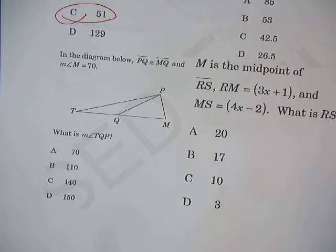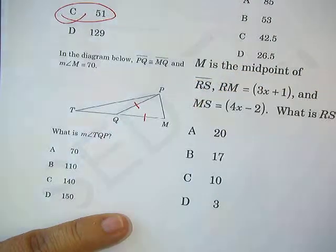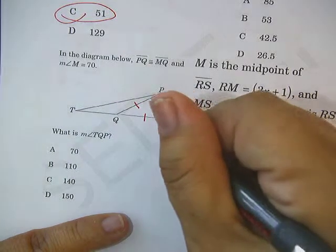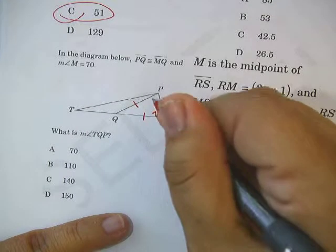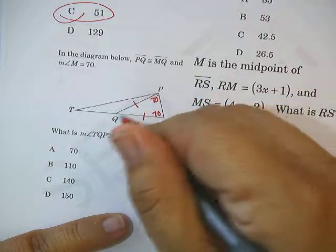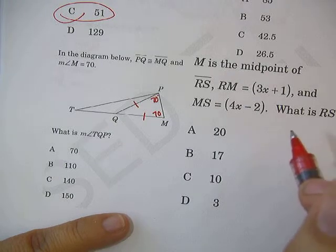In the diagram below, PQ is congruent to MQ. So that makes this an isosceles triangle. And they tell me the measure of angle M is 70. Well, if angle M is 70, then angle P, well, QPM is 70. And what are they looking for? TQP. So this is what we're looking for. I'll call that X.